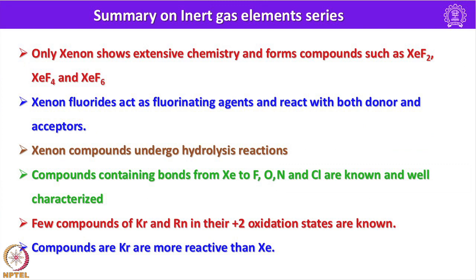To summarize the overall chemistry of group 18 elements: only xenon shows extensive chemistry, forming compounds such as xenon difluoride, tetrafluoride and hexafluoride. Xenon fluorides act as fluorinating agents and react with both donors and acceptors. Xenon compounds undergo hydrolysis reactions to form oxyfluorides. Compounds containing bonds from xenon to fluorine, oxygen, nitrogen, chlorine and carbon are well characterized. A few compounds of krypton and radon in their +2 oxidation states are also known; compounds of krypton are much more reactive than those of xenon.